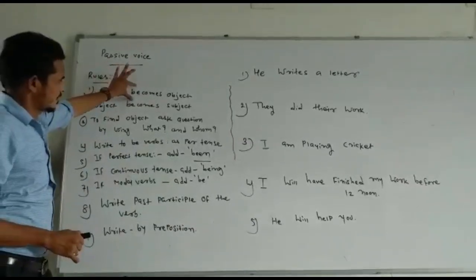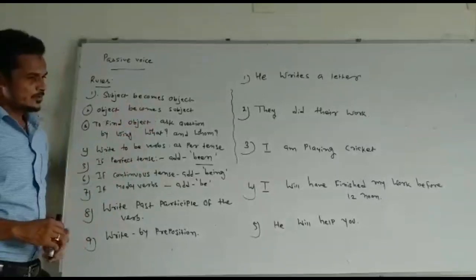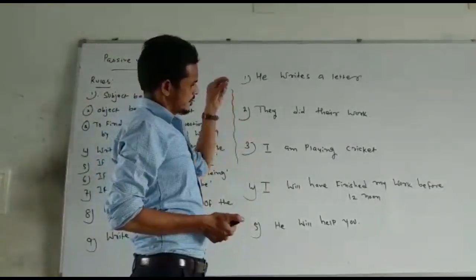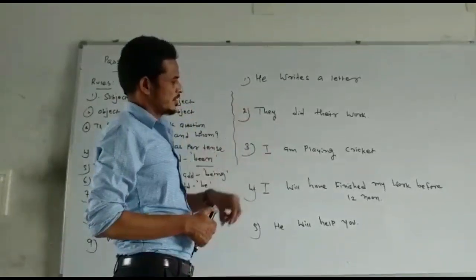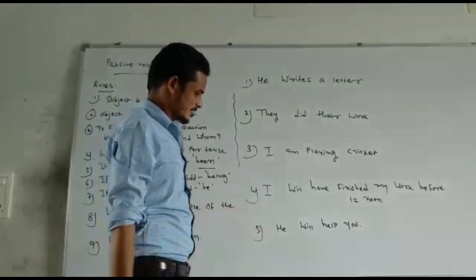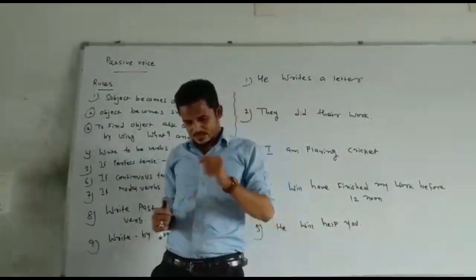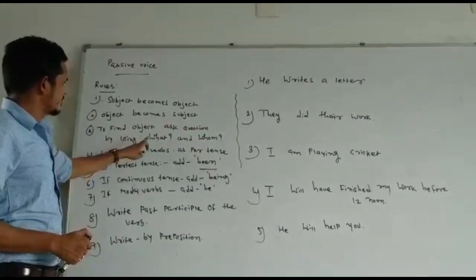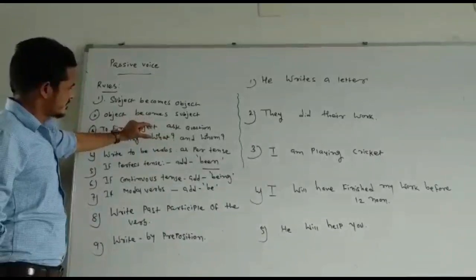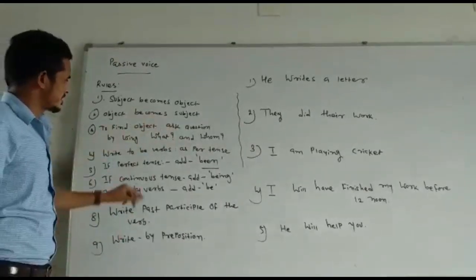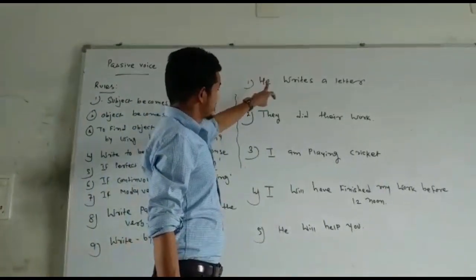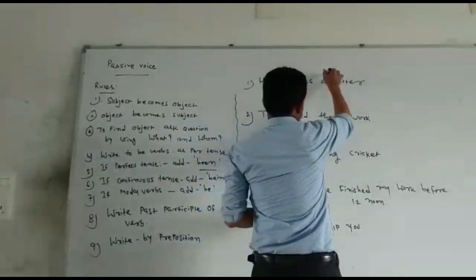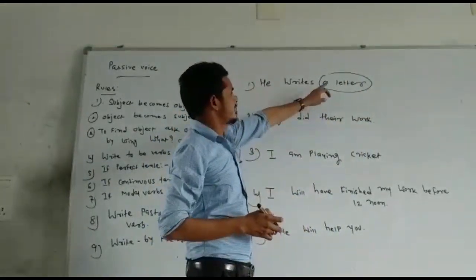So, first rule: subject becomes object and object becomes subject. Now, if the sentence has many objects and different types of words are used, how do we find the object from a complex sentence? The key to find the object is to ask a question using 'what' and 'whom.' In this sentence — 'He writes a letter' — he writes what? A letter. So 'a letter' is our object.